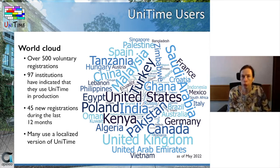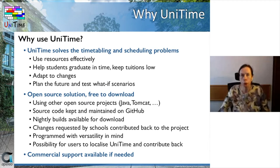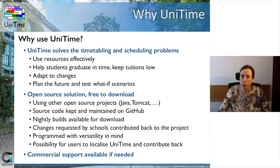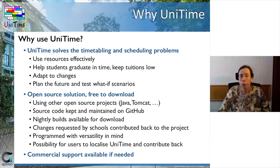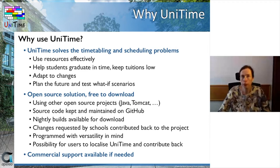Many of the institutions also use a localized version of UniTime so they can adopt it. Why have they decided to use UniTime? The main reason is that UniTime solves the timetabling and scheduling problems of higher education institutions, helping institutions use resources more effectively. It helps students graduate in time so they don't spend so much money on tuition by studying extra years, and by efficiency it helps to keep tuition low. UniTime also helps institutions adapt to changes such as a new building or new curriculum, and it makes it possible to plan the future and test different what-if scenarios.